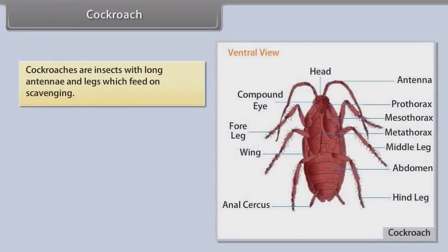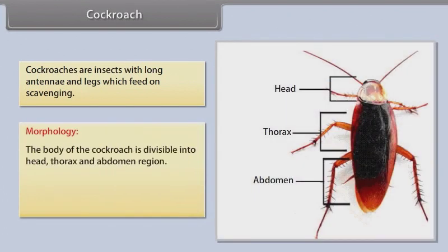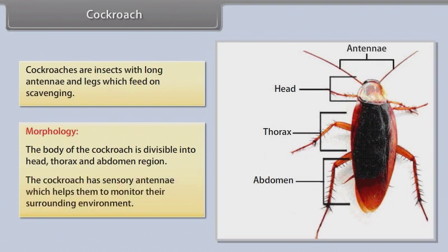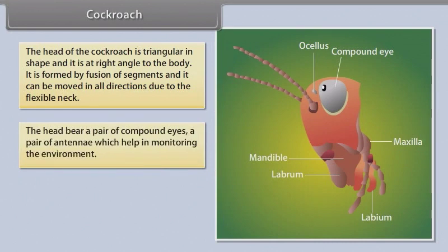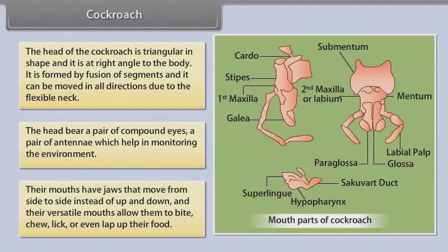Cockroach. Cockroaches are insects with long antennae and legs which feed by scavenging. Morphology. The body of the cockroach is divisible into head, thorax and abdomen region. The cockroach has sensory antennae which help them monitor their surrounding environment. The head is triangular in shape and at right angle to the body, formed by fusion of segments and can be moved in all directions due to the flexible neck. The head bears a pair of compound eyes and a pair of antennae. Their mouths have jaws that move from side to side instead of up and down, and their versatile mouths allow them to bite, chew, lick or even lap up their food.